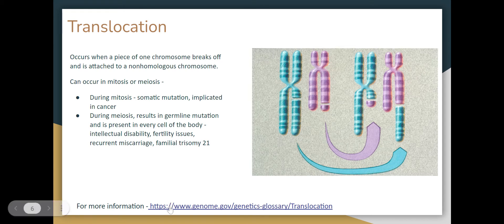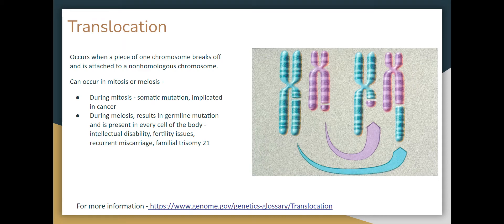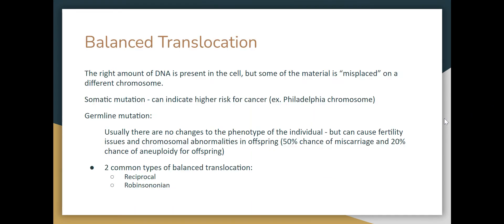If you want a little more information, genome.gov is a fabulous site — there's a link here — that gives you a 28-second animated clip of what a translocation looks like. It's not really a tricky concept; it's just how it's applied. We have two types of translocations: balanced and unbalanced. A balanced translocation happens when the right amount of DNA is present in the cell, but some of the material is misplaced to a different, non-homologous chromosome.